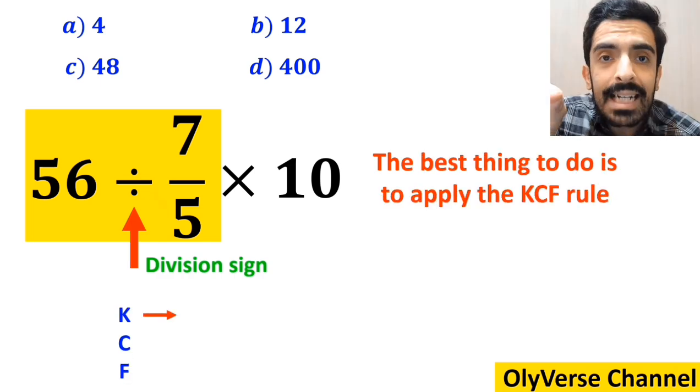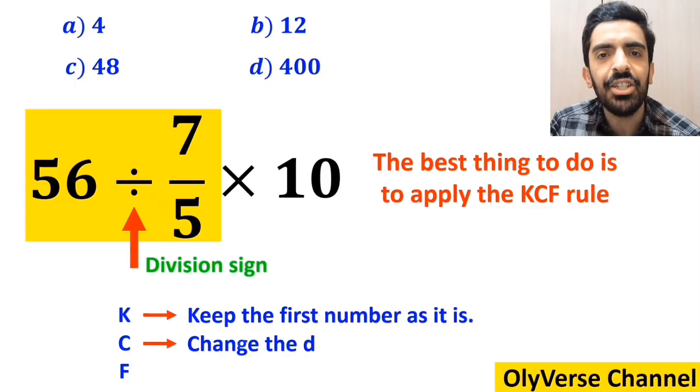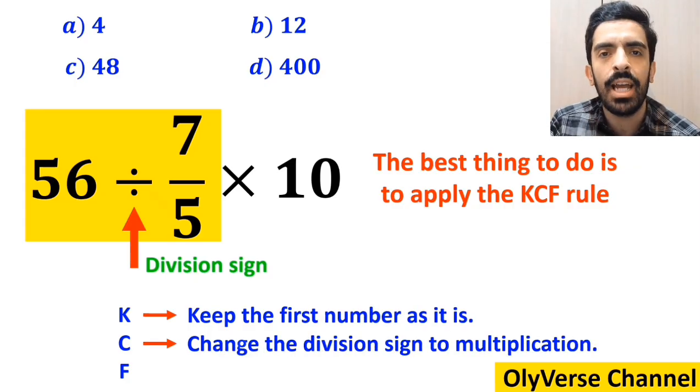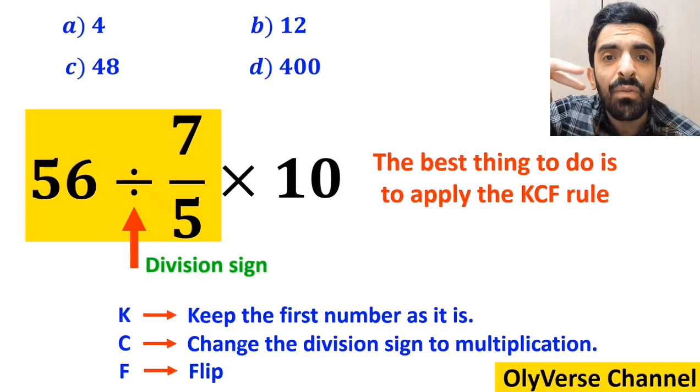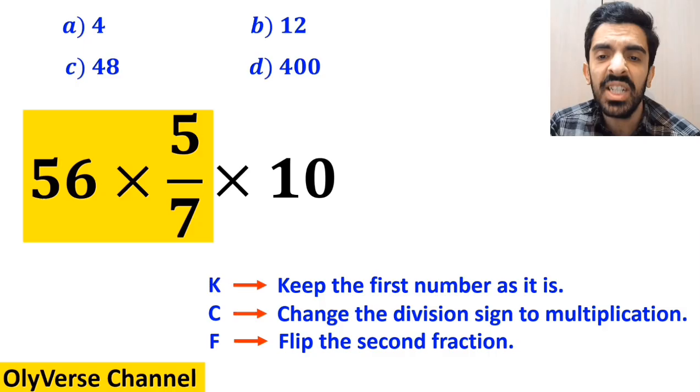In this rule, K stands for keep the first number as it is. C stands for change the division sign to multiplication. And F stands for flip the second fraction. So, we remove the highlighted part and replace it with 56 multiplied by 5 over 7.